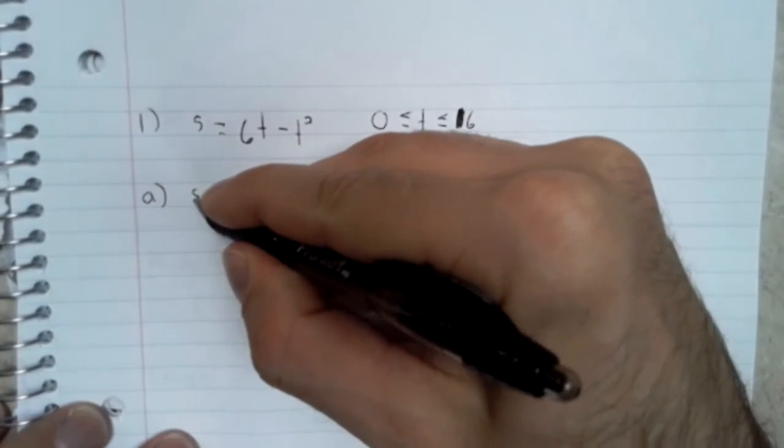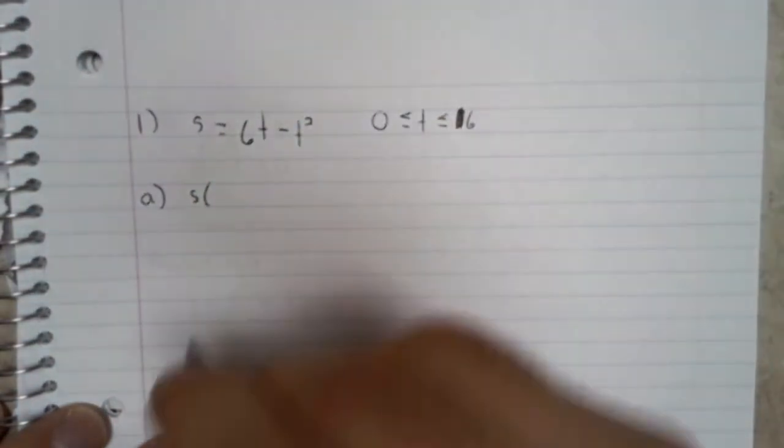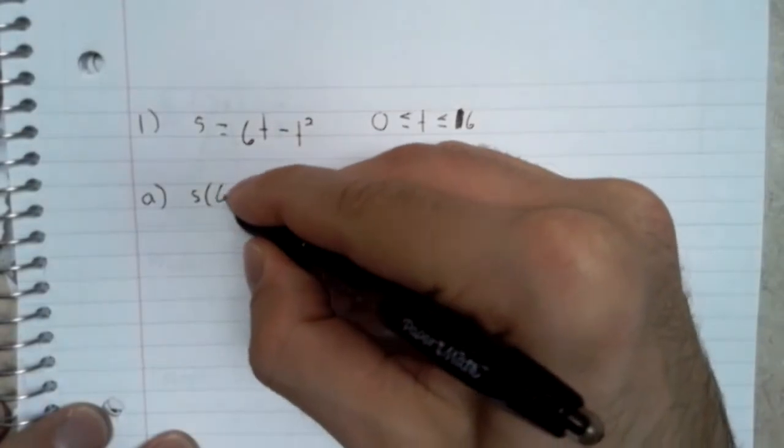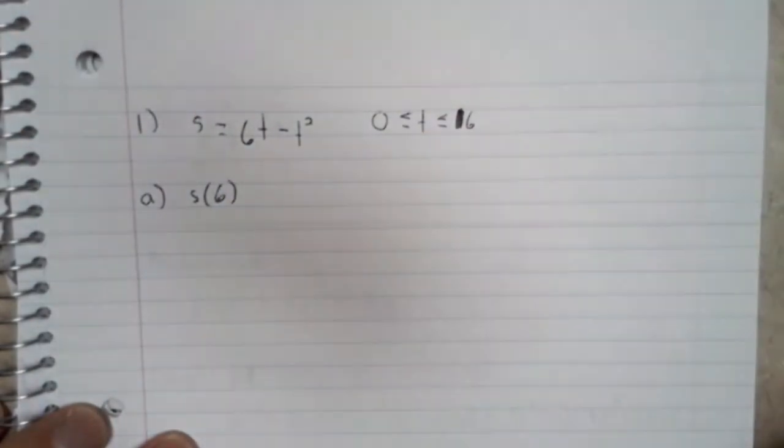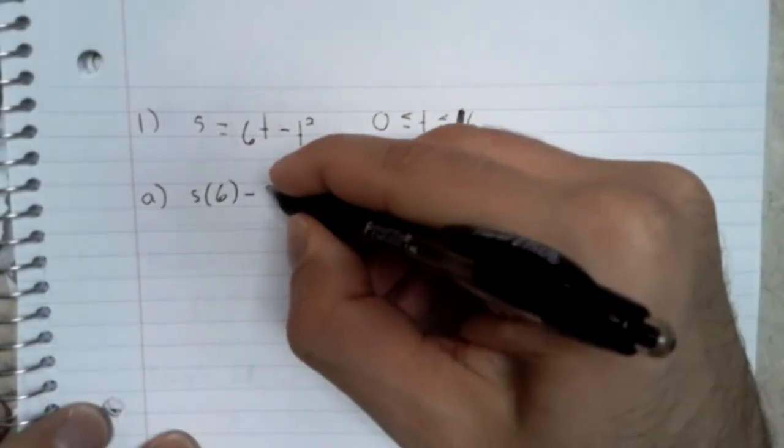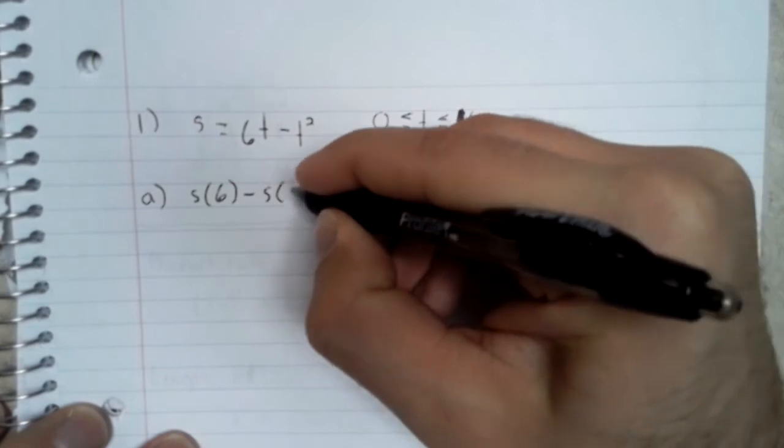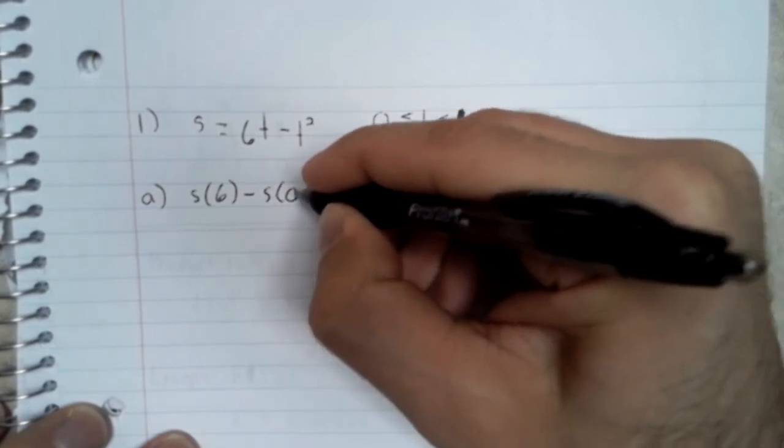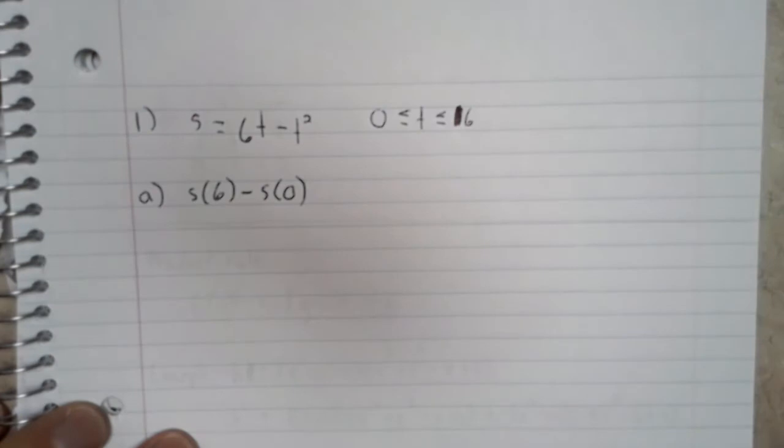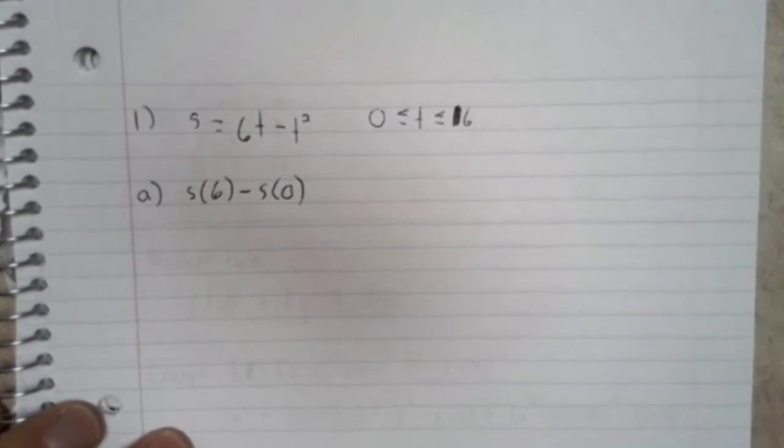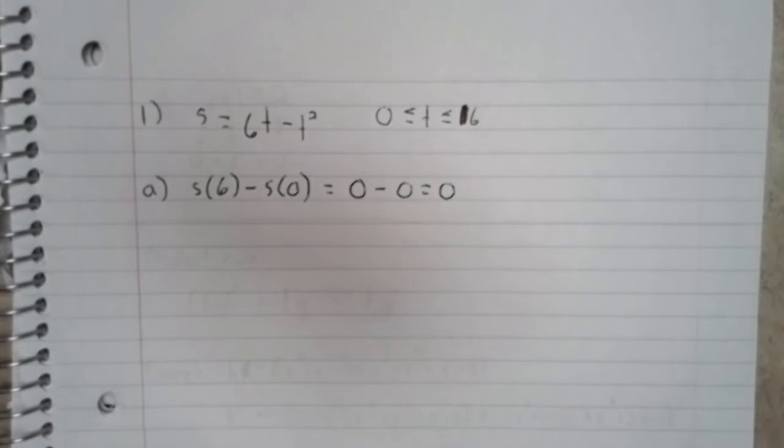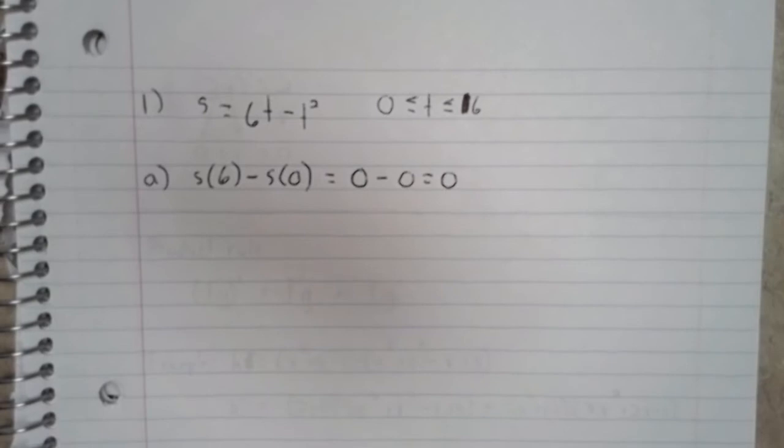To find the displacement, we just look at where the object is at the end of this interval minus where the object is at the beginning of this interval, s of 6 minus s of 0. So I make the displacement out to be 0.